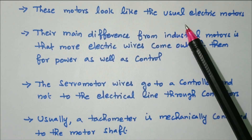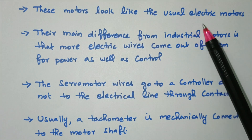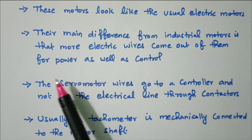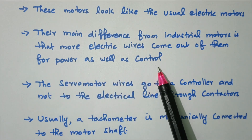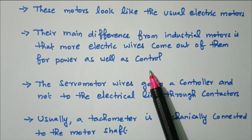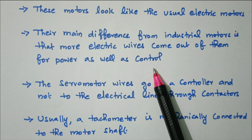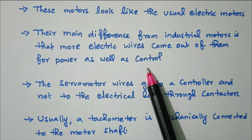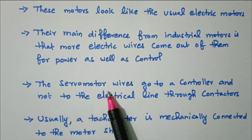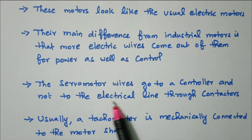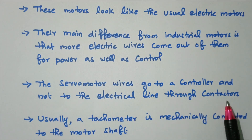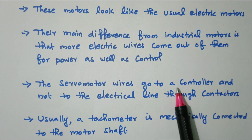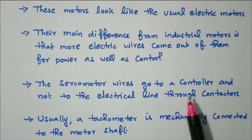This motor looks like a usual electric motor, except the diameter is lesser and length is more. Their main difference from industrial motors is that more electric wires come out of them — for power as well as control. Normal motors have two or three wires, but servo motors have many wires for control purposes. The servo motor wires go to a controller, and not directly to the electric line. The controller manages the DC or AC servo motor and gives instructions for rotation speed and everything.